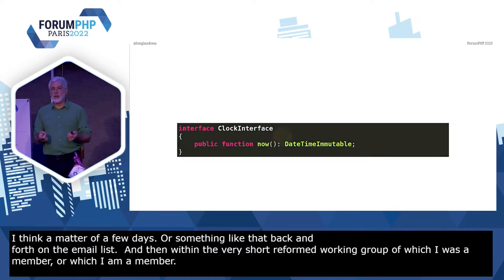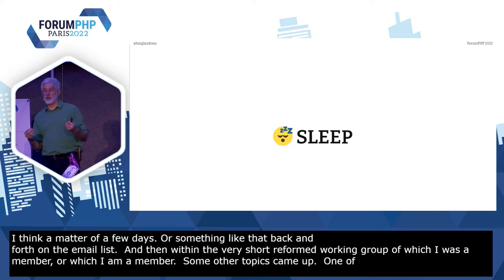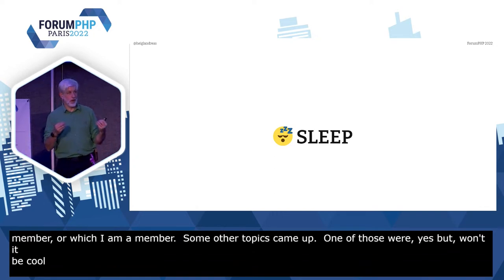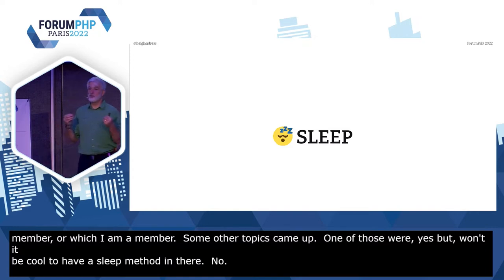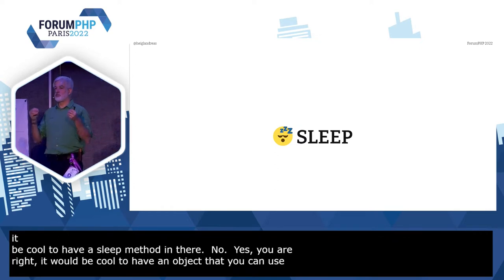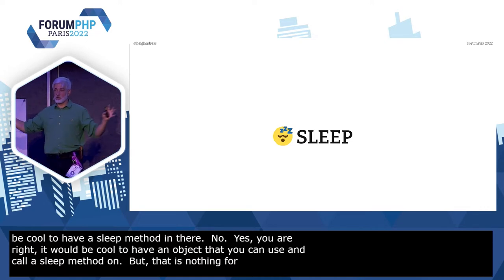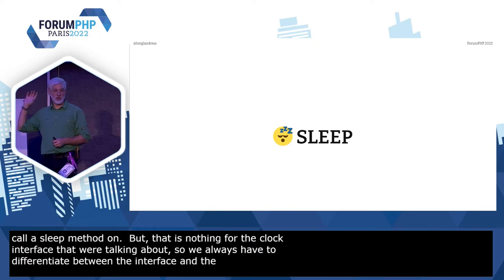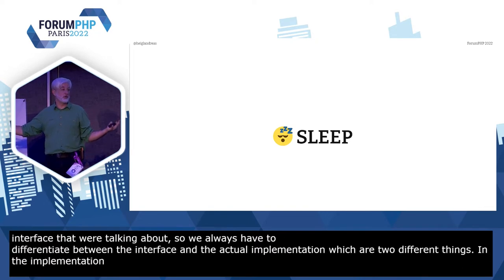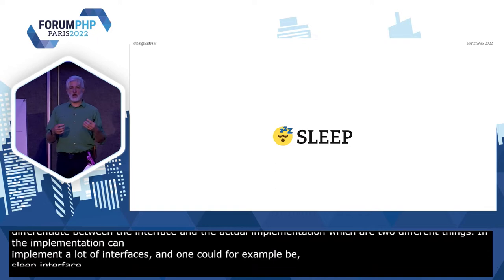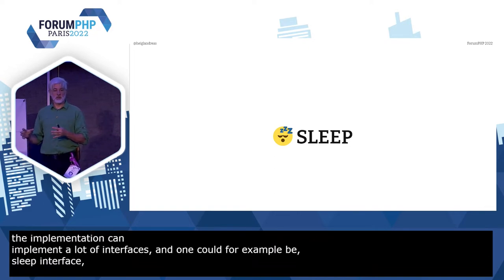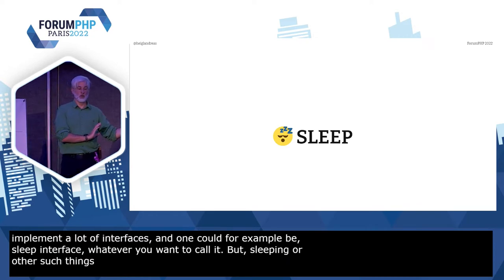One of those was: wouldn't it be cool to have a sleep method in there? No. Yes, you're right — it would be cool to have an object with a sleep method. But that is nothing for the clock interface we are talking about. We always have to differentiate between the interface and the actual implementation, which are two different things. The implementation can implement a lot of interfaces. One of them could, for example, be a sleep interface or whatever you want to call it. But sleeping and other such behavioral things we want to separate from our clock interface, from getting predictable time.